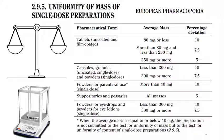Weight variation test is important even though assay and content uniformity are also checked. Deviation in weight may lead to changes in assay, uniformity of dosage units, or content uniformity. For tablets, if weight changes, the tablet may have higher or lower hardness, higher or lower thickness, and also higher or lower disintegration time (DT). Higher or lower DT may also impact dissolution for some formulations. Weight variation is the primary in-process test during compression run, and is also performed as a finished product test.